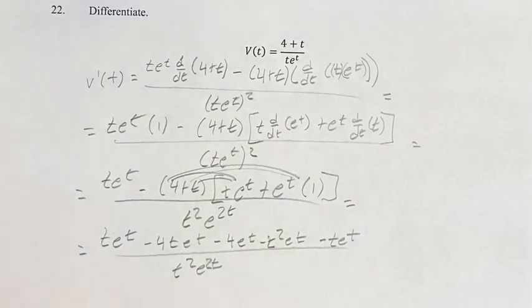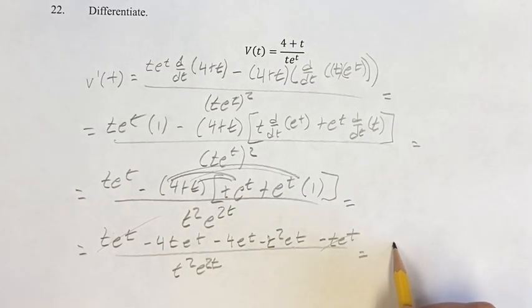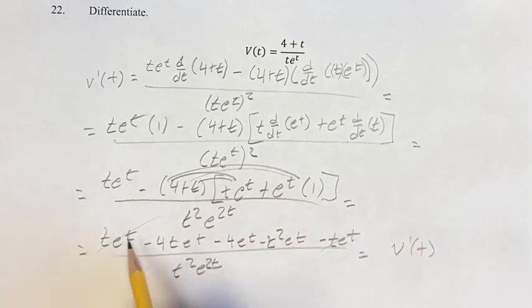One last thing we can do is we can combine like terms, which in this case means t e to the t minus t e to the t is 0, so we can just cross those out, and this is our derivative of these terms.